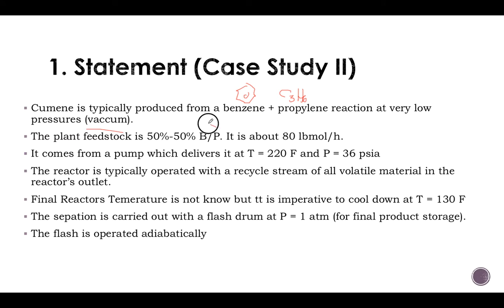The plant feedstock is 50-50, and this is per mole, and we have about 80 pound mole per hour. So it comes from a pump which delivers at these conditions the feedstock.